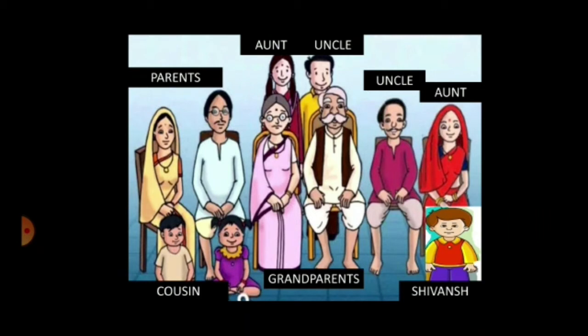Brother of your mother and father are called uncle. Sister of your mother and father are called aunts. Children of uncles and aunts are called your cousins.